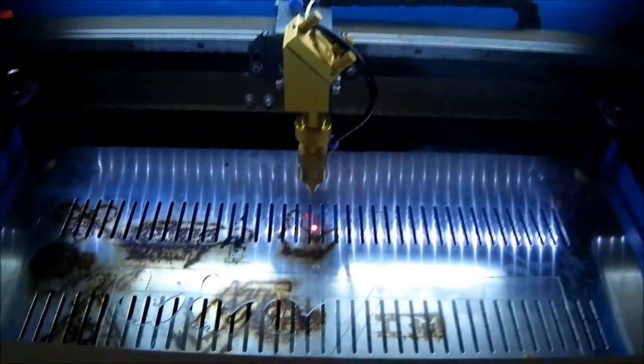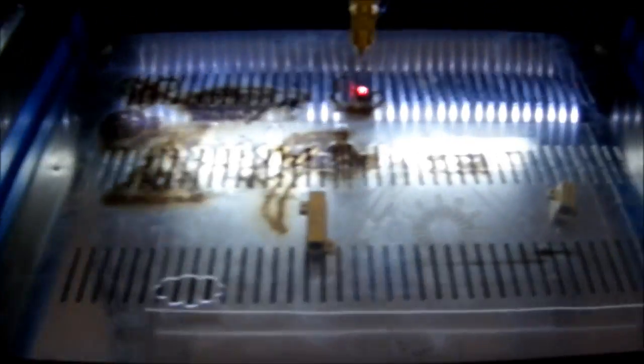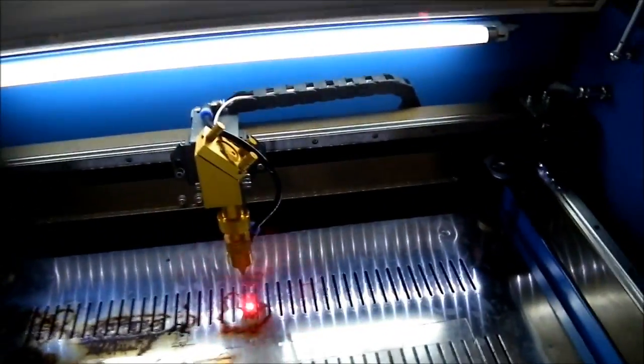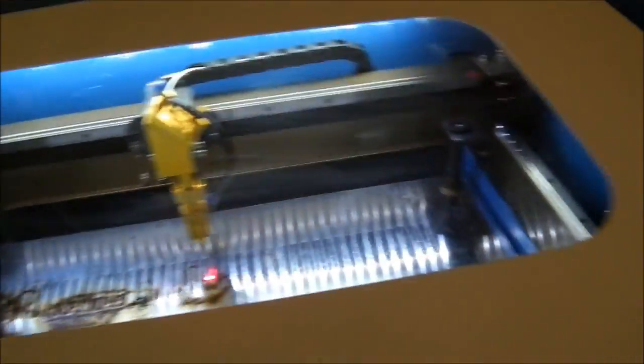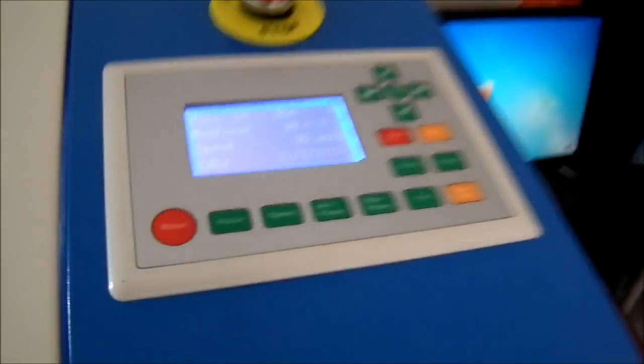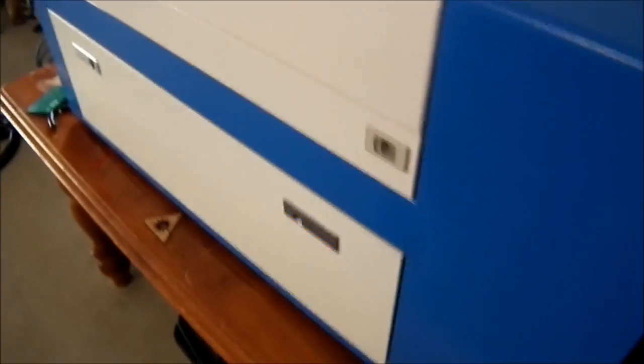So what it is, is it has a 500 by 300 workspace. It's kind of the next step up from those really cheap, like $800 machines. The really nice thing is it's got a DSP unit, and it's got like a Z axis, which is why it takes up so much space down that way.